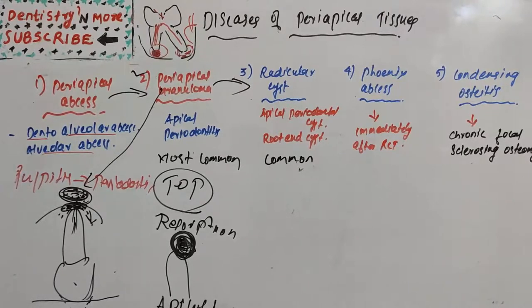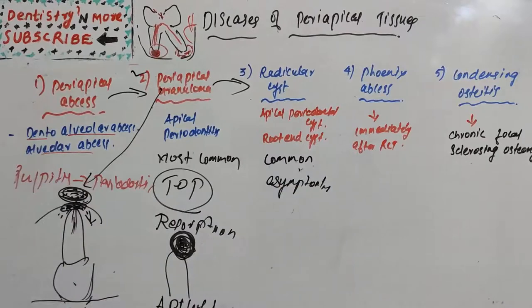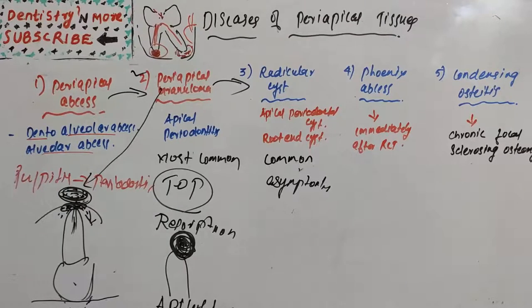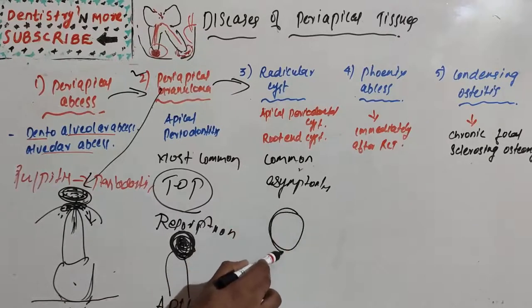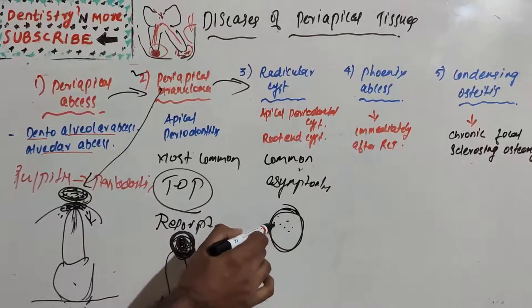Clinical features: the radicular cyst is commonly asymptomatic, unlike periapical abscess and granuloma which are symptomatic. It presents with no clinical evidence of its presence, is seldom painful, and is not sensitive to percussion. It represents a chronic inflammatory process that develops only over a very long period of time. The cyst forms a fluid-filled cavity.